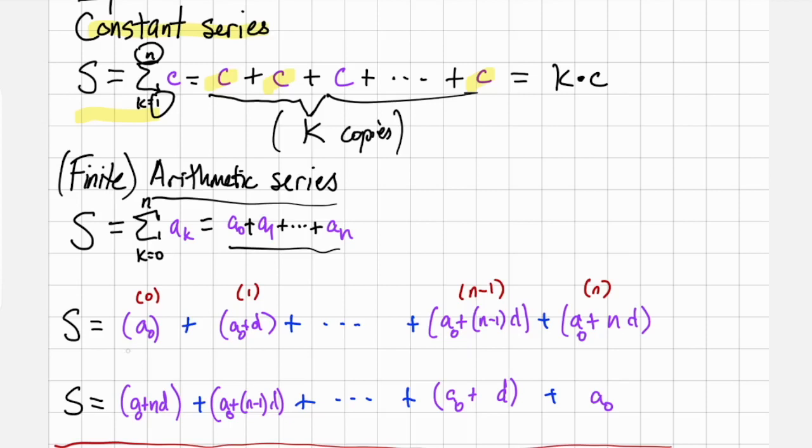An arithmetic series starts off with some value, adds d, adds d again, adds d again, and continues to add multiples of d. We'd like to know what the sum of these terms is.